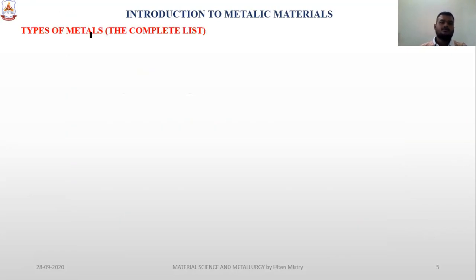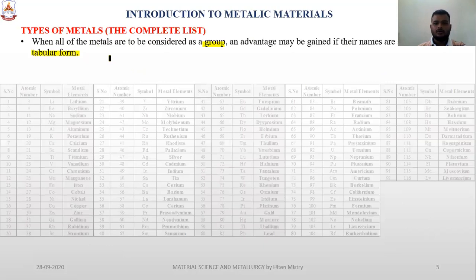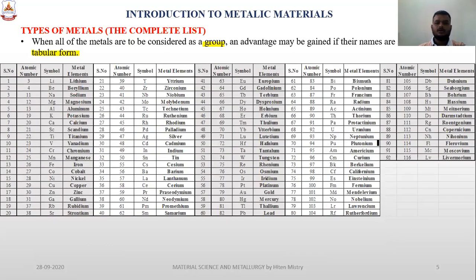These are types of metals. The complete list — when all metals are considered as a group, the advantage may be gained by setting them down in tabular form. There are a total of 92 metals listed with their atomic number, symbol, and metallic element name.